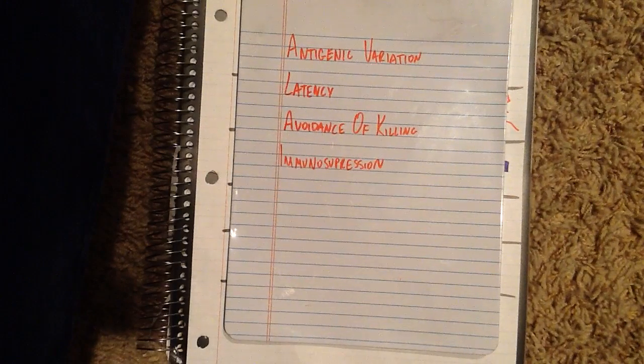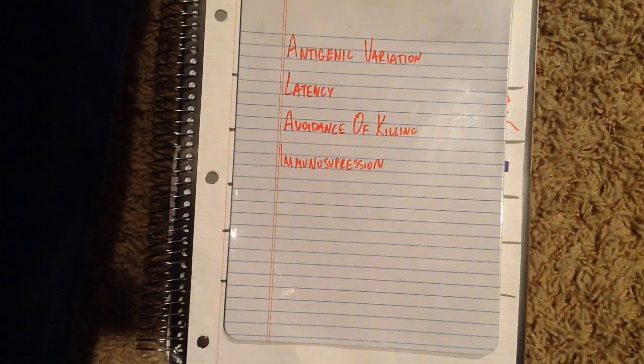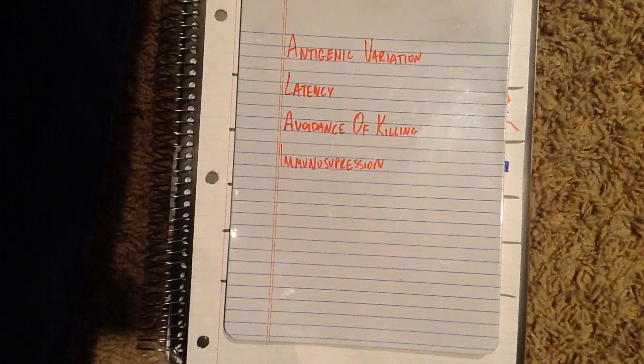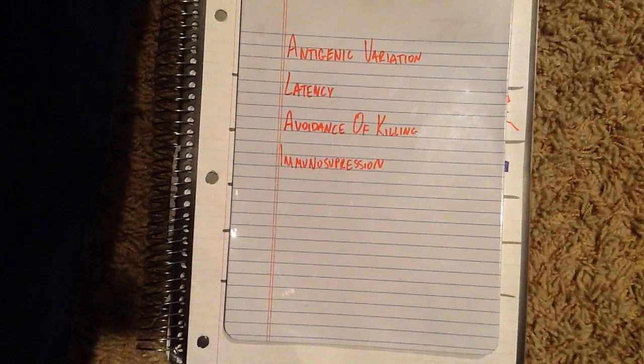In general, there's four ways the pathogen can evade the immune system response. These ways being antigenic variation, latency or the disease not yet showing symptoms, avoidance of killing, and immunosuppression, which will reduce the activation of the immune system.